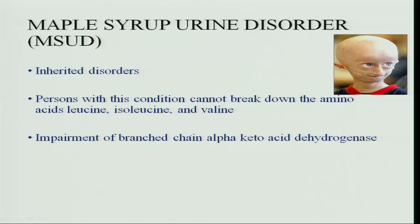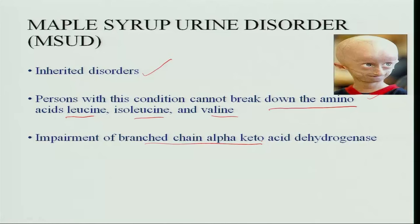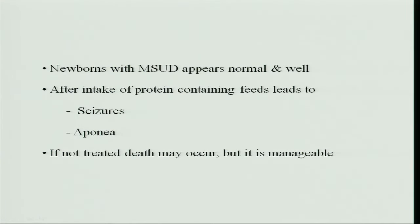Maple syrup urine disease (MSUD) is another inherited metabolic disorder. A person with this condition cannot break down the amino acids leucine, isoleucine, and valine — well represented in corn and jowar — due to impairment of branched-chain alpha-keto acid dehydrogenase enzyme. Newborns with MSUD appear normal, but after intake of protein feeds containing leucine, isoleucine, and valine, seizures and apnea occur. Cessation of breathing happens, and if the condition is not immediately recognized and feeding stopped, death may occur.